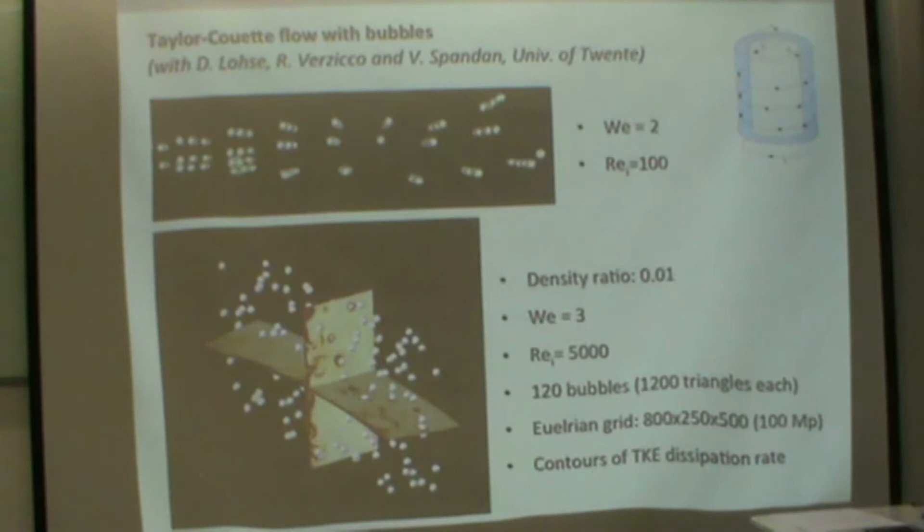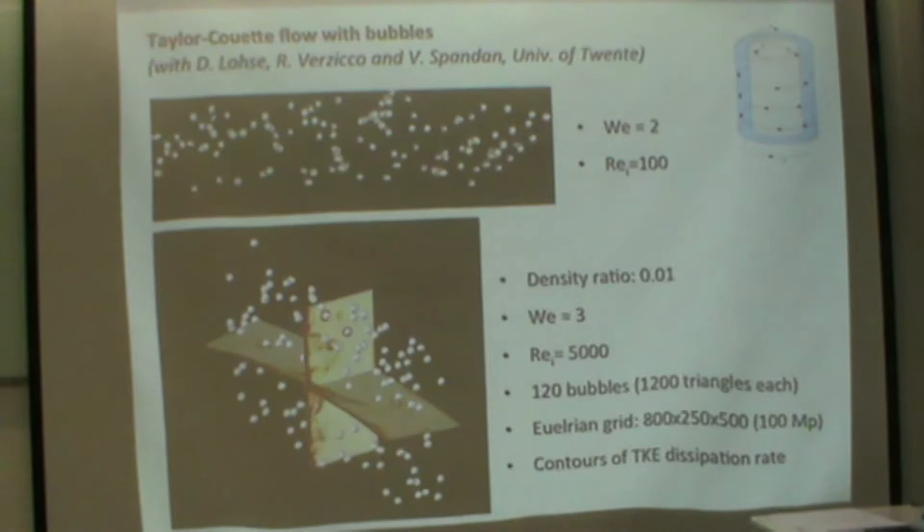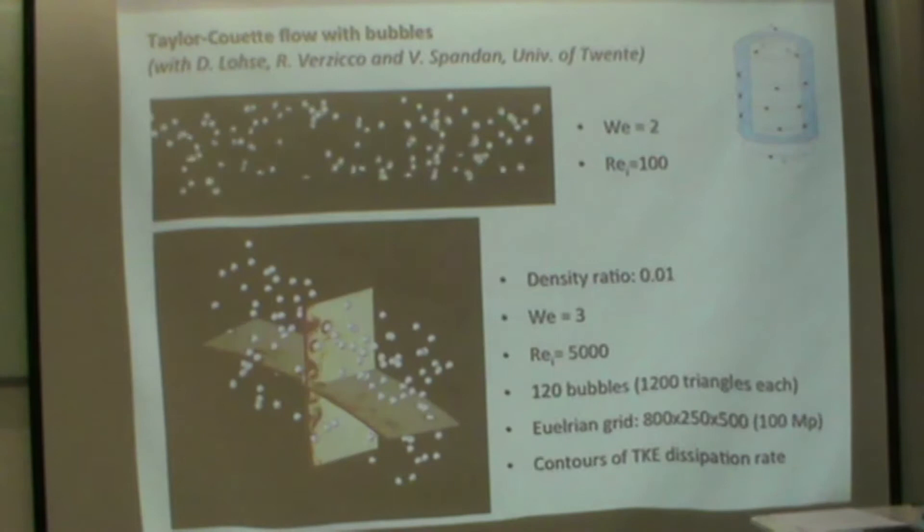This is a huge simulation with 100 million points and 120 bubbles, each described by about 1,000 triangles. These are Taylor-Couette flows with two cylinders rotating with different velocities. You can see the collision model put in good effect. This simulation is running parallel, so it doesn't run on my laptop.